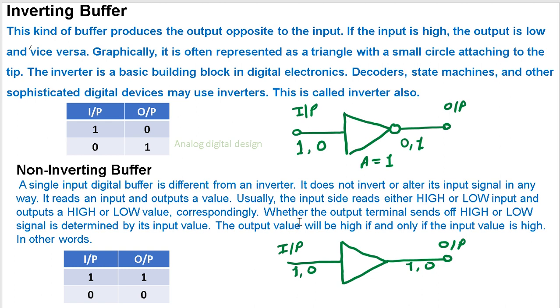The signal is determined by its input value. The output value will be high if and only if the input value is high.